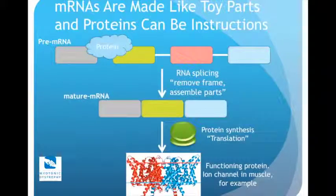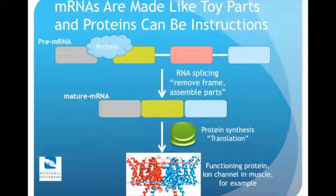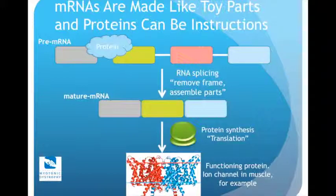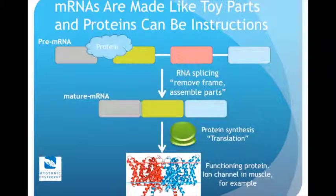How does a cell decide which pieces of a messenger RNA become part of the protein versus framing? The cell recruits proteins that bind to the messenger RNA and serve as instructions to determine how to assemble a mature messenger RNA from its parts. Once assembled, ribosomes read out the mature messenger RNA to make protein. Some of the proteins they can make are ion channels in muscle, which are dysregulated in myotonic dystrophy and help explain some of the muscle abnormalities.